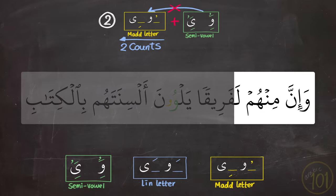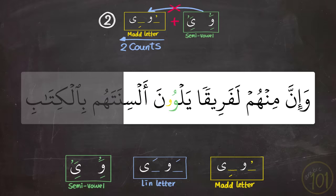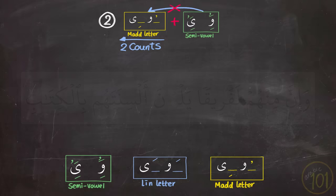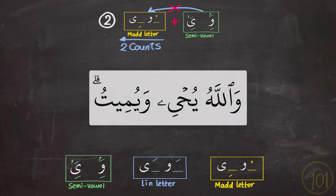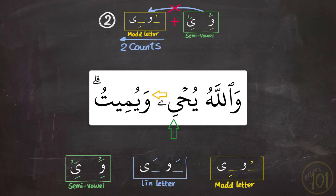وإن منهم لفريقاً يلوون ألسنتهم بالكتاب — so يلوون, not يلون, because this would be fusing two وو's into one. Another example involving يا: والله يحيي ويميت — so يحيي, not يحيي with the يا extended, because this would be extending the يا instead of pronouncing two يا's one after the other.